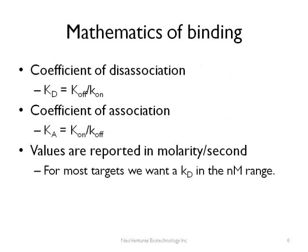Of course this can be described mathematically. Usually we use the coefficient of dissociation. This is just the rate of the complex falling apart divided by the rate of it staying together. For aptamers we look for KDs in the low nanomolar to high picomolar range, usually, depending on the target.